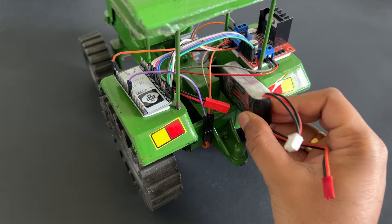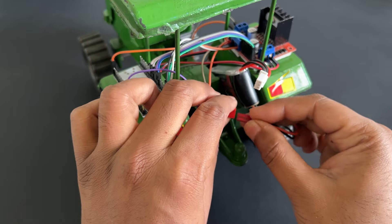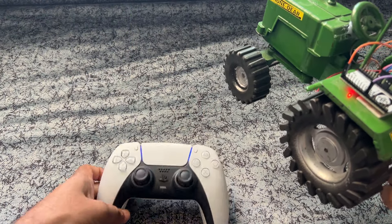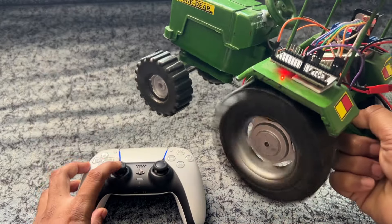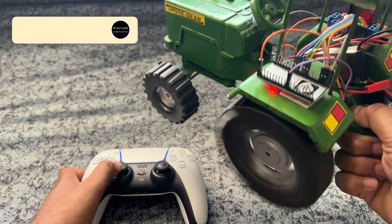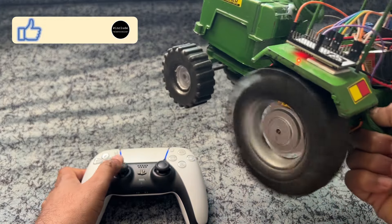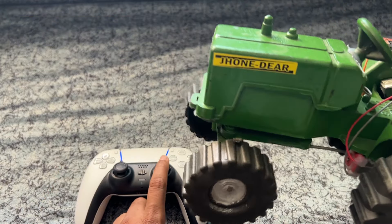Now connect battery to car. That's it. Let's see how it works. Press PS button on controller. Now we can control the car using left and right side joysticks. Left joystick is used to move the tractor forward and backward. Right joystick is used to move the tractor in left and right direction.